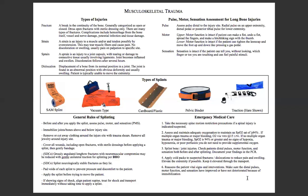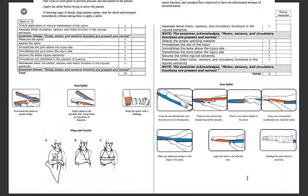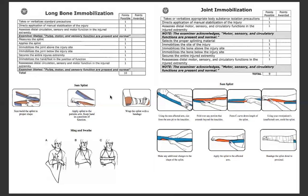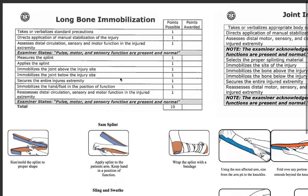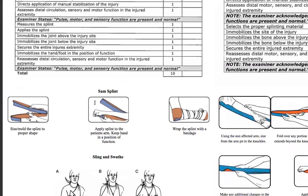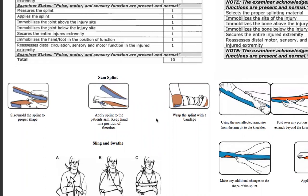That's our intro to musculoskeletal trauma. Let's take a closer look at the actual skill. Besides these skills, we do have videos — there are also some other videos on YouTube. Just type in 'long bone immobilization, National Registry, EMT.' We're going to discuss long bone immobilization first. For these skills, you will be using a SAM splint. Every agency carries these — from mountain rescue to the fire department, to the ambulance, to the Forest Service. Everybody's got these because they're really great.